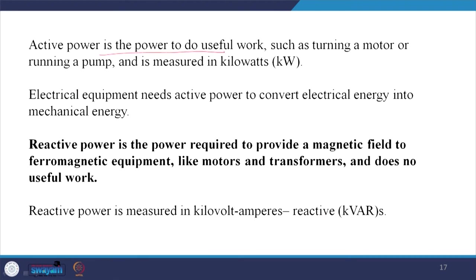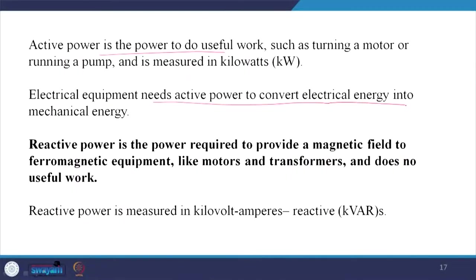Active power is the power that does useful work such as turning a motor or running a pump, and is measured in kilowatts or megawatts. Electrical equipment needs active power to convert electrical energy into mechanical energy. Reactive power is required to provide a magnetic field to ferromagnetic equipment like motors and transformers; it does not do any useful work, but you are required to supply it — and it is exchanged back and forth between source and load.